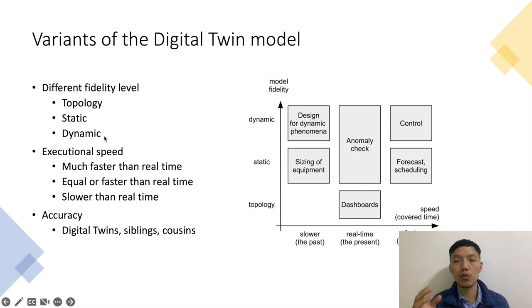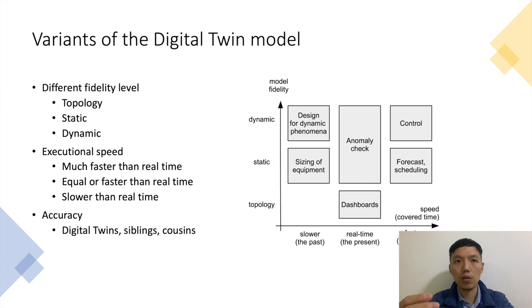The dynamic model is the right model to use for power systems. If the execution speed is much faster than the real system, it can be used to derive controls, forecasts, or scheduling. If it runs a little bit faster or equal to the real system, it could be used to perform real-time simulation, real-time analysis, and normal checks. And if it is slower, it's probably cheaper, so it could be used for design or planning purposes.